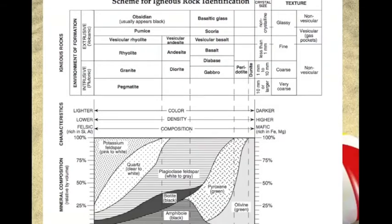Another rock type is igneous. This graph is used to identify the different types of igneous rocks by composition, crystal size, texture, and environment of formation. An example of environment of formation is intrusive, or if the rock was formed underground, and extrusive, or if the rock was formed above ground.